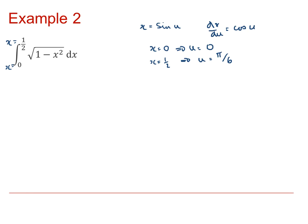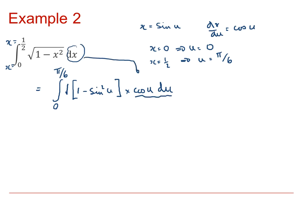Making the substitution, the integral becomes the integral from u equals 0 to π/6. The square root of 1 minus x squared becomes the square root of 1 minus sin²(u), and we have cos(u) du. Since 1 minus sin²(u) equals cos²(u), the square root of cos²(u) is cos(u). Multiplied by cos(u) du, we get the integral from 0 to π/6 of cos²(u) du.